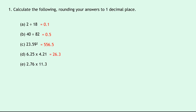Lastly, Part E says 2.76 times 11.3. If we put that into our calculator, you should get 31.188, which rounding to one decimal place will give us 31.2. Hopefully nice and straightforward.